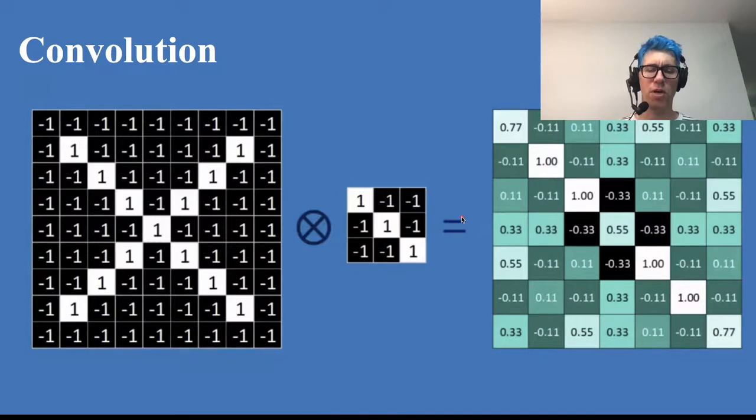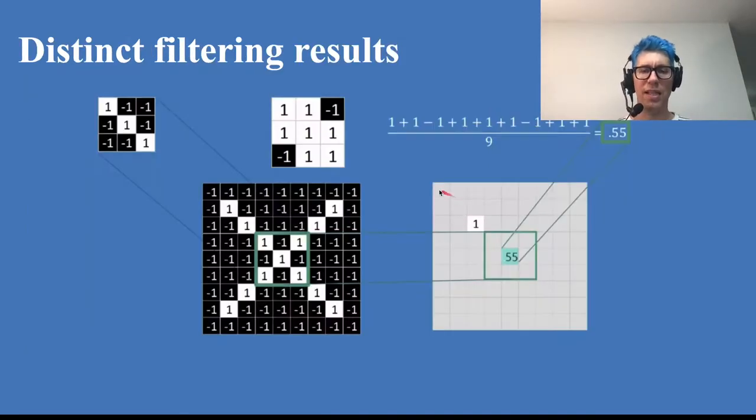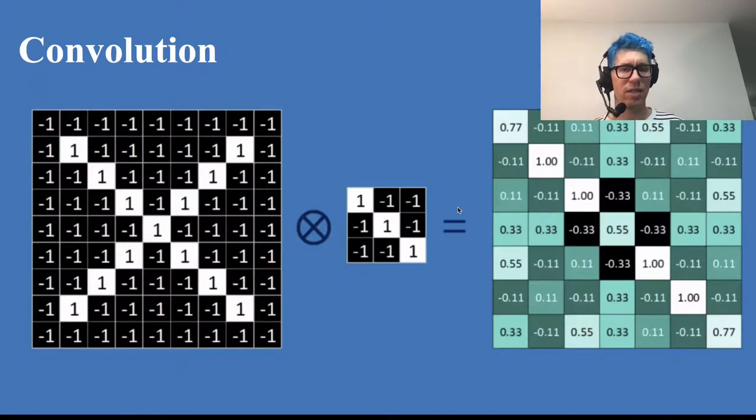And then we do this for all possible locations. Now when I say all possible locations, look what's happening there—this location I didn't do. Why didn't I do it? Because it goes outside of the image. Outside of the image it wouldn't be defined. We'll talk about padding, which solves that problem in just a second. But we apply this to every possible location on the inside, giving us this as a result.